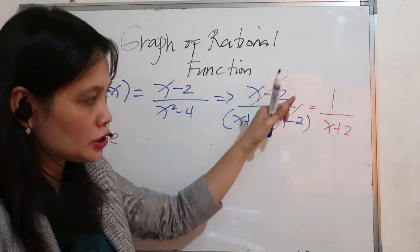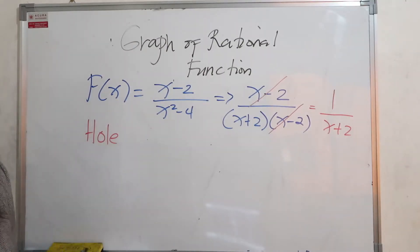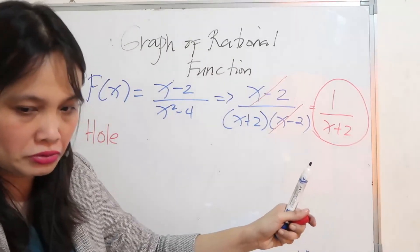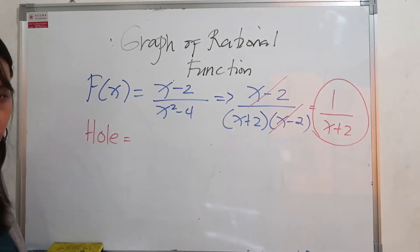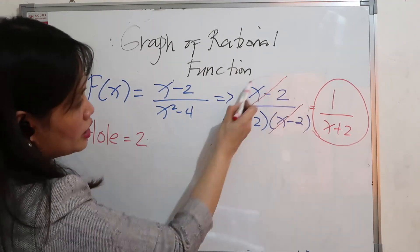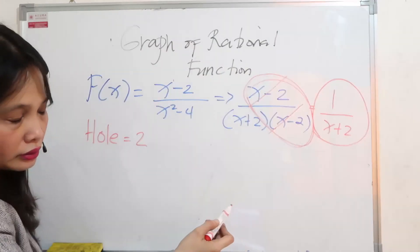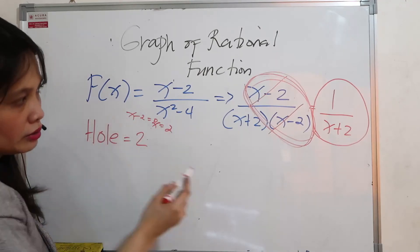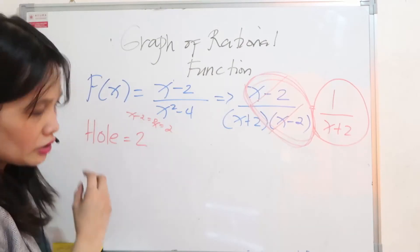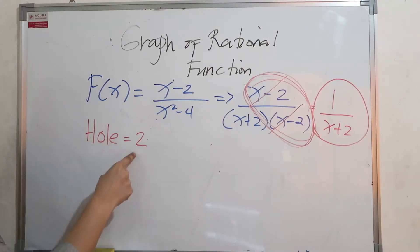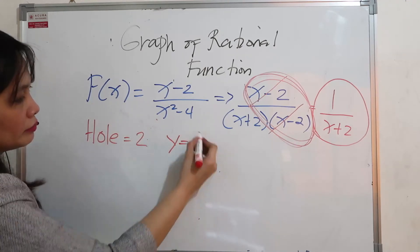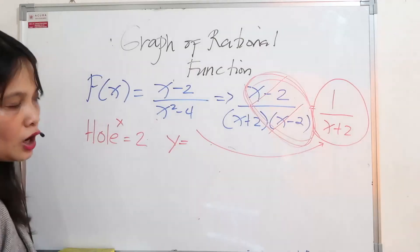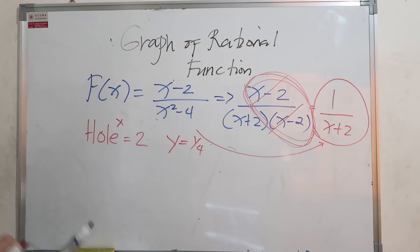After cancellation, the simplified function is 1 over x plus 2. When a cancellation occurs, there is a hole at the cancelled factor. The cancelled factor was x minus 2, so x minus 2 equals 0 gives x equals 2. The hole is at x equals 2. To find the y-coordinate of the hole, substitute x equals 2 into the simplified function: y equals 1 over 2 plus 2 equals 1 fourth. So the hole is at the point 2, 1 fourth.